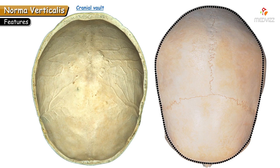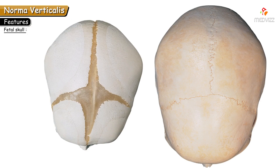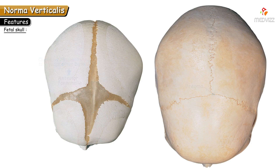The dome-like arched roof of the skull forming the skull cap is known as the vault of the skull. In the fetal skull, at the site of bregma, we can see a large membranous gap which is diamond-shaped — this gap is known as the anterior fontanelle.